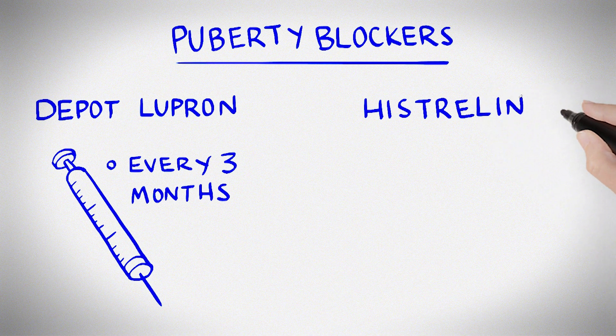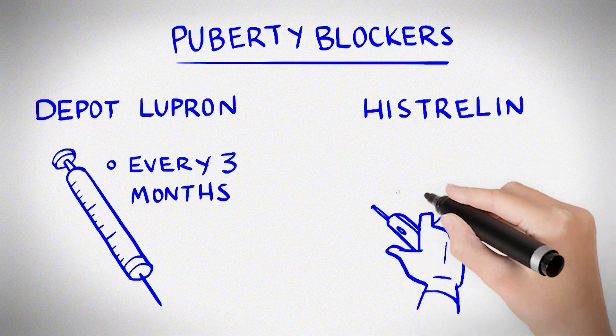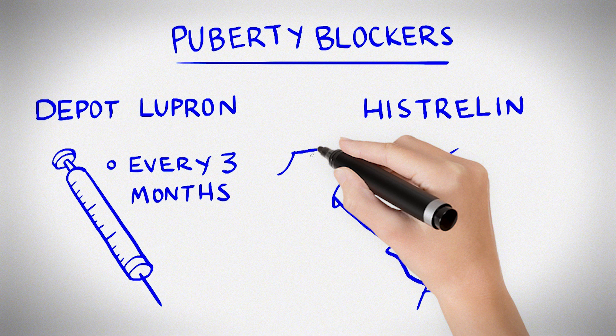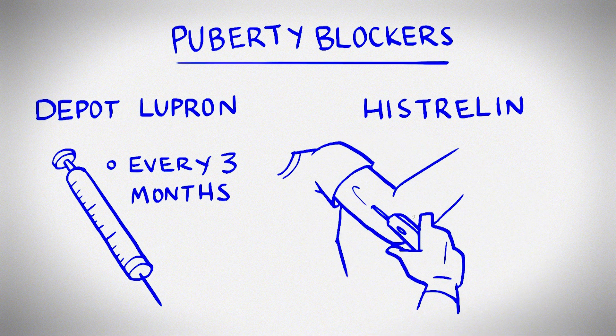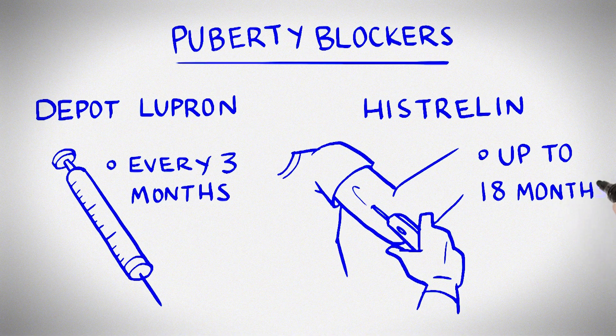Histrelin is a medicine that comes in a tiny plastic tube. A doctor inserts the tube under your skin in your upper arm. This can happen in clinic or in the operating room. The tube can stay in your arm for up to 18 months.